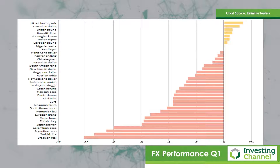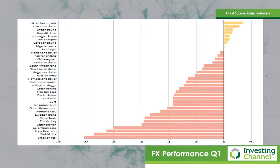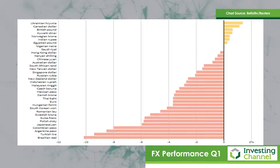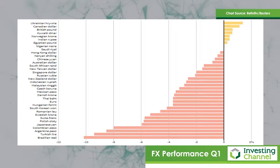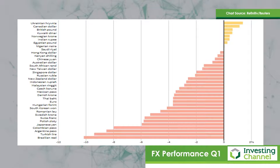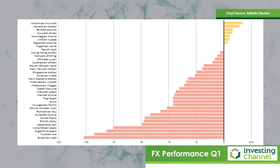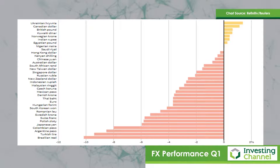At the top of the chart, obviously we've got those countries where yield differentials aren't actually widening with the US, and that's why we see the strength there in the Canadian dollar, British pound, and indeed the Norwegian krona. Obviously this was one of the big counter-consensus trades of Q1 — that the dollar was going to weaken and it didn't — and that's basically what we've seen as a result of the rising US interest rates.